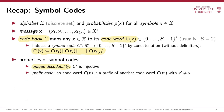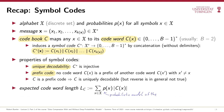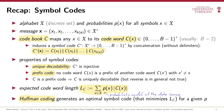We also introduced prefix-free symbol codes, also just called prefix codes for short, where no codeword is the prefix of another codeword. Prefix-freeness is easier to verify than unique decodability, and every prefix-free code is uniquely decodable, but not every uniquely decodable symbol code is prefix-free. We then argued that assigning short codewords to high-probability symbols gives a code C with a small expected codeword length L_C. We introduced Huffman coding, which takes a probability distribution over symbols and generates a prefix-free symbol code that minimizes the expected codeword length.